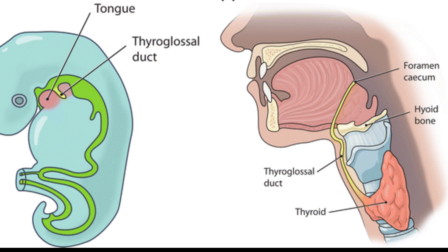During development, the thyroid primordia runs from the foramen cecum in the base of the tongue to the lower anterior neck. It descends in front, behind, or through the hyoid bone along the thyroglosal duct to form the thyroid gland. The duct normally involutes in the 8th to 10th week of gestation.